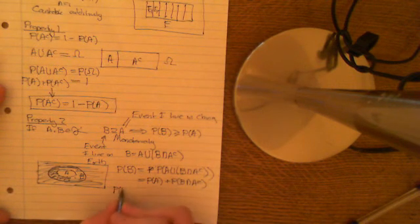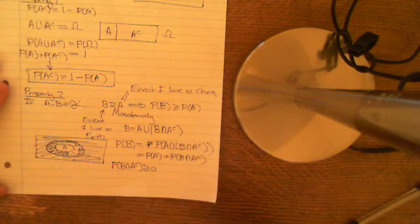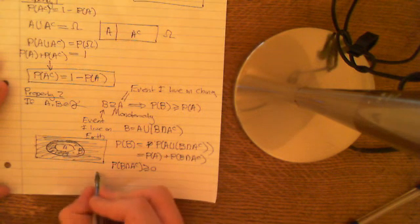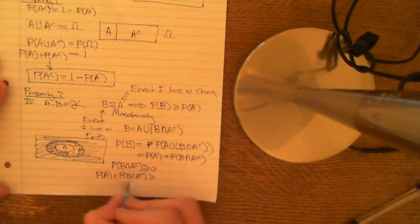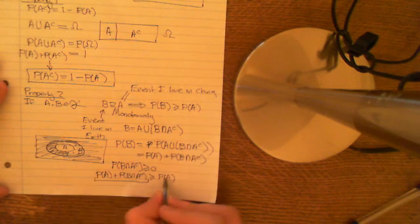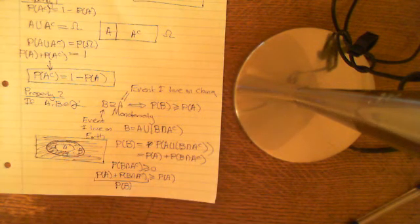The probability of B intersect A complement is greater than or equal to 0, because probability maps the events onto [0, 1], so it is not negative. Therefore, applying the ordered field axioms of the real numbers and adding the probability of A onto both sides of this inequality, I get that probability of A plus probability of B intersect A complement is greater than or equal to probability of A. Replacing probability of A plus probability of B intersect A complement with probability of B, we get that probability of B is greater than or equal to probability of A. We are using the axioms of the real numbers here, which, if we're going to do this rigorously, we should note.